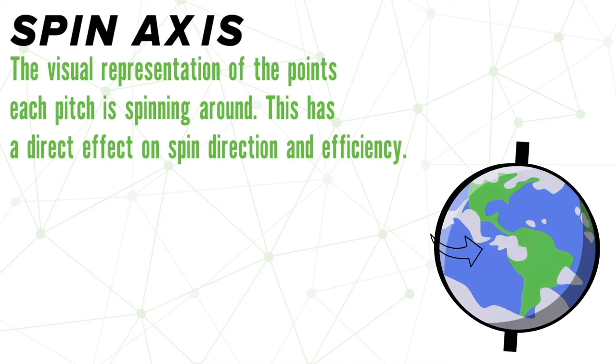This 2D representation is exactly what most people think about when they picture spin direction, but what about spin efficiency?